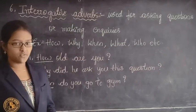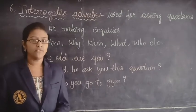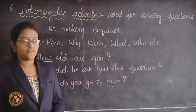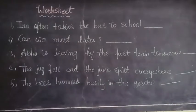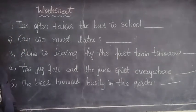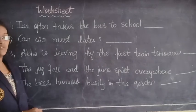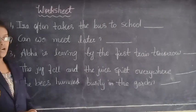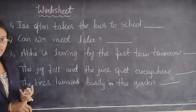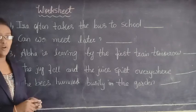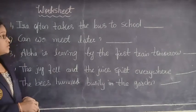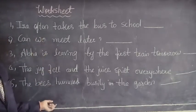Children, I hope you all understood these adverbs and the kinds of adverbs. Based on this topic I am going to give you a worksheet. How many kinds of adverbs did I tell you? Six kinds: adverb of manner, adverb of place, adverb of time and frequency, adverb of reason, adverb of number, and last, interrogative adverbs. Based on the kinds of adverbs, I have given you this worksheet.